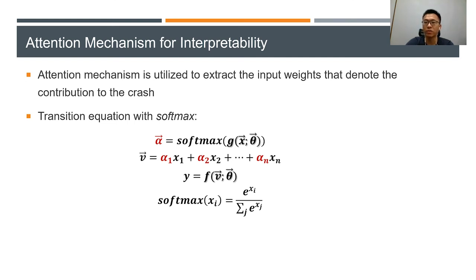Function g and function f can be convolutional neural networks, recurrent neural networks, or fully connected networks. And we use mean squared loss function.